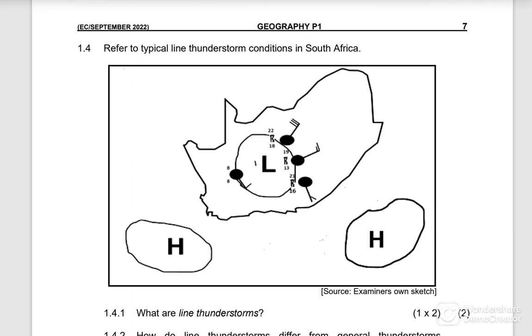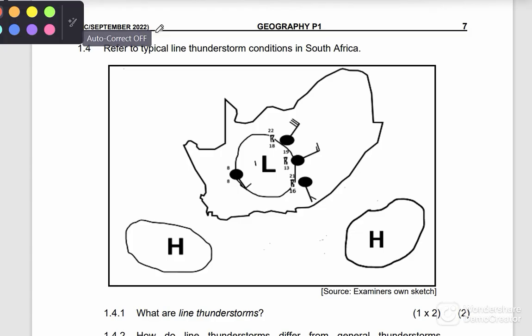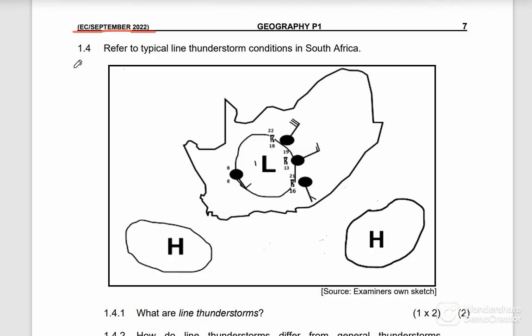Hello and welcome back. Today we're looking at revision for Geography Paper One — this paper was written last year, September/November 2022, for the Eastern Cape trials. This lesson is focused on line thunderstorms: how they form, the process that takes place, and the impacts they bring in the interior of South Africa.